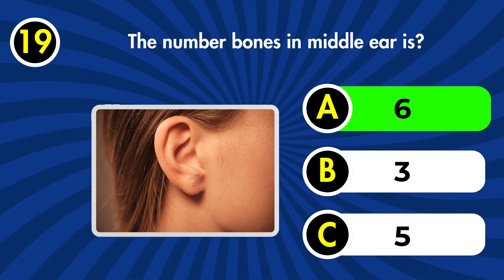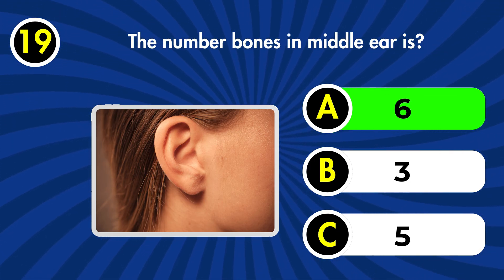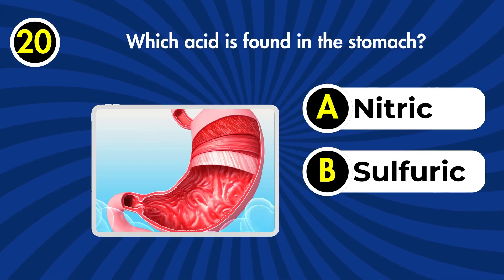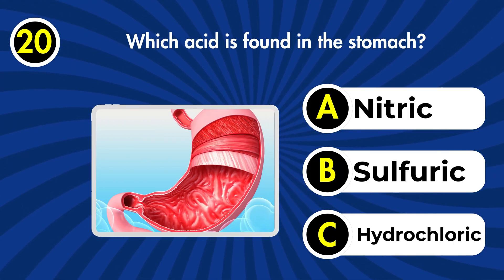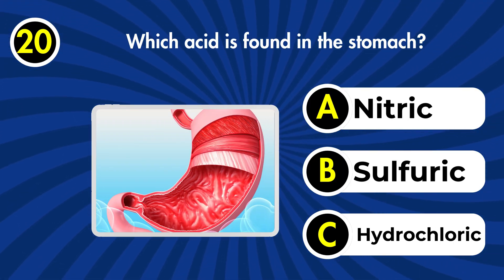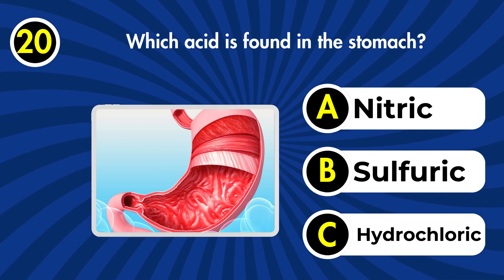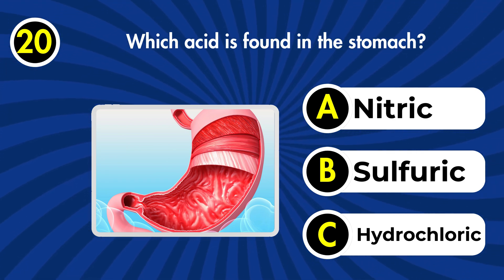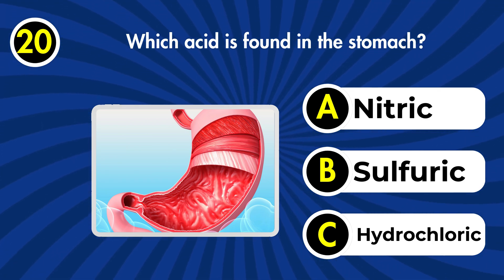Next question: the number of bones in the middle ear is: a) 6, b) 3, c) 5. Correct answer: a) six bones. Next question: which acid is found in the stomach? a) Nitric, b) sulfuric, c) hydrochloric.